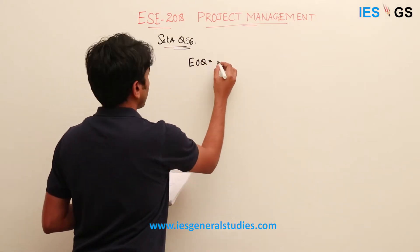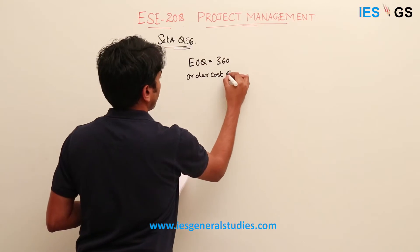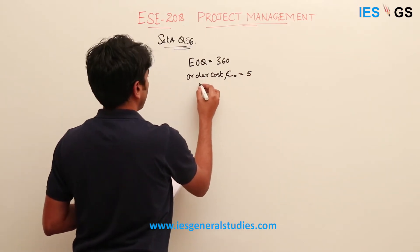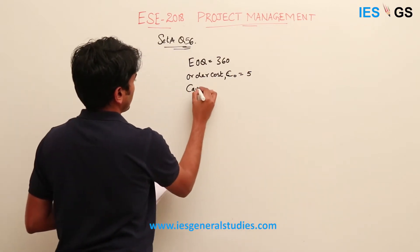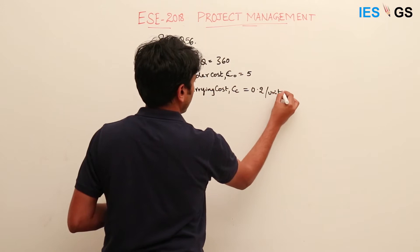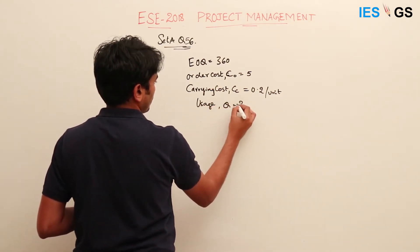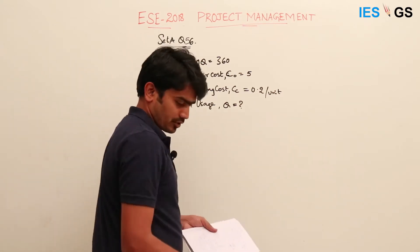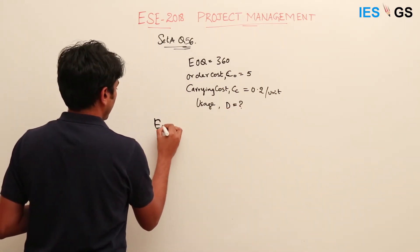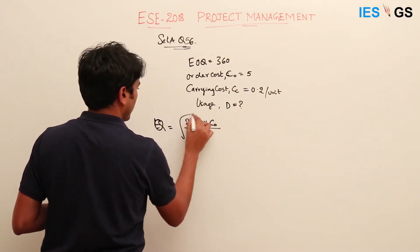The given data is: EOQ is 360, the order cost C₀ is equal to 5 rupees per order, and the carrying cost Cc is equal to 0.2 per unit. We need to find the usage — the demand D. As per the formula, EOQ = √(2 × D × C₀ / Cc).